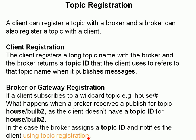The other way around: if a client subscribes to a wildcard — for example, 'house/#' — and the broker receives a message on a specific matching topic, it hasn't got a subscriber to that exact topic, only to the wildcard. So the broker needs to obtain a topic ID for it.